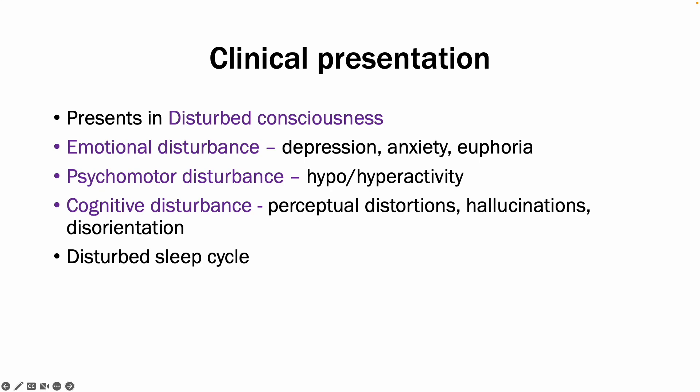The two main types are hyper and hypoactive. In hyperactive delirium, a patient would be agitated, with hallucinations and delusions. Whereas in hypoactive delirium, it can actually mimic depression — the patient is drowsy, apathetic and has disturbed sleep. So it is important to be aware of these two types.